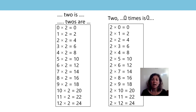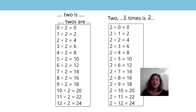2, 0 times is 0. 2, 1 times is 2. 2, 2 times is 4. 2, 3 times is 6. 2, 4 times is 8. 2, 5 times is 10. 2, 6 times is 12. 2, 7 times is 14. 2, 8 times is 16. 2, 9 times is 18. 2, 10 times is 20. 2, 11 times is 22. 2, 12 times is 24. You did that so well that time. Well done.